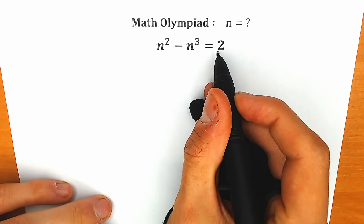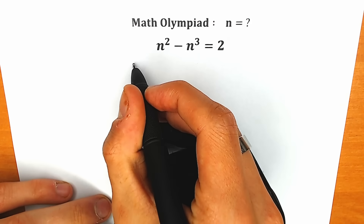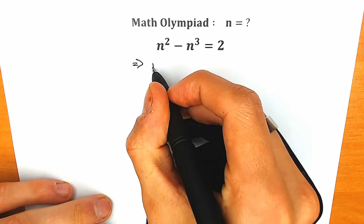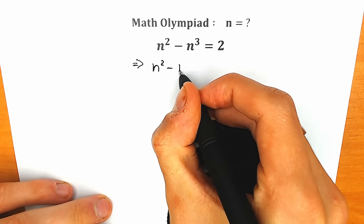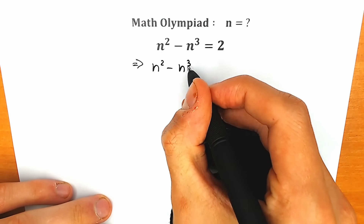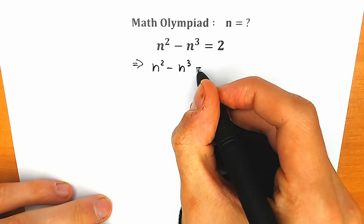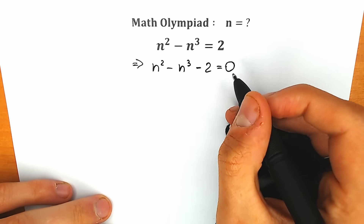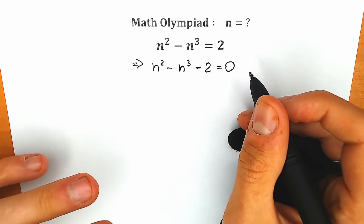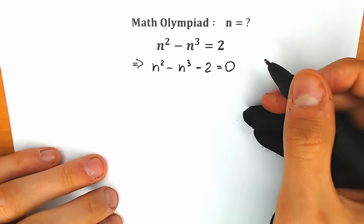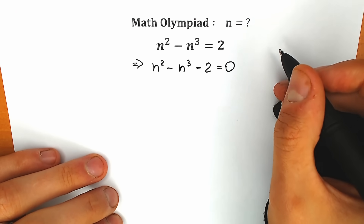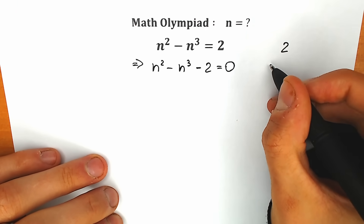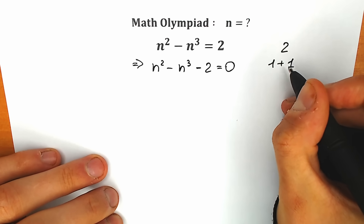First of all, let's subtract 2 from both sides. On the left side we have the same thing: n-squared minus n-cubed. We subtract 2 from both sides, giving us equal to 0. Right now, these two — we can write it in a lot of ways, we can write it as 2 plus 0, but I suggest you express this 2 as 1 plus 1.